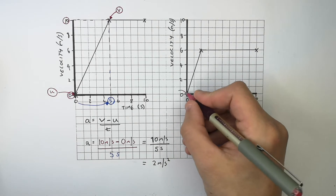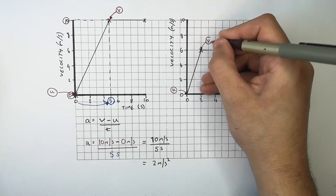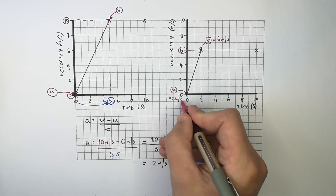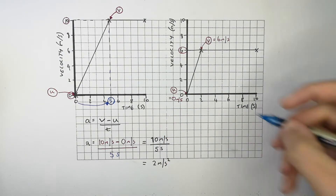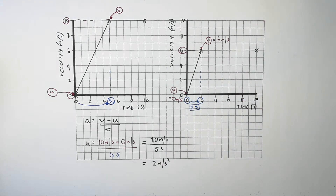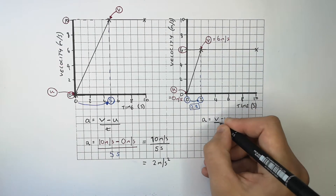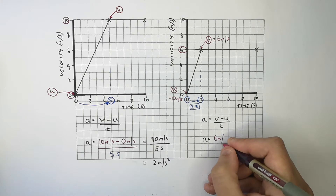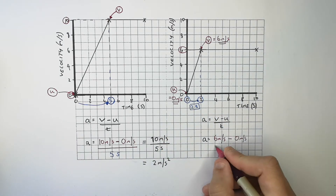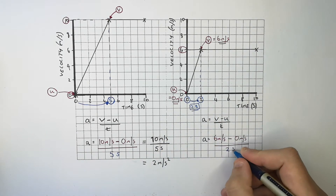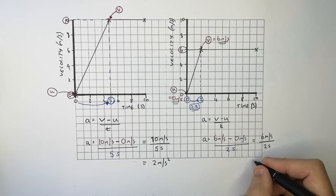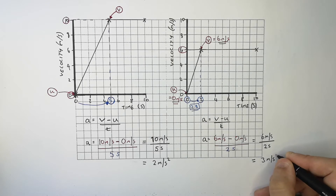In the second example, identify the final velocity v and the initial velocity u. The final velocity v is 6 metres per second, and the initial velocity u is 0 metres per second. The time the object took to increase its velocity from 0 to 6 metres per second is 2 seconds. Recalling the equation a equals v minus u over t and substituting: a equals 6 metres per second minus 0 metres per second, divided by 2 seconds. The change in velocity is 6 metres per second divided by 2 seconds, giving an acceleration of 3 metres per second squared.